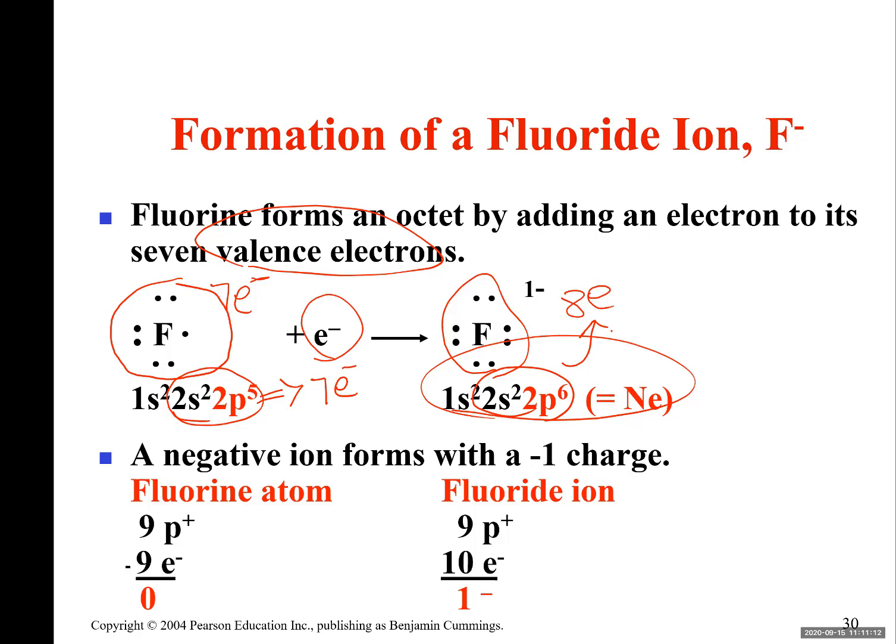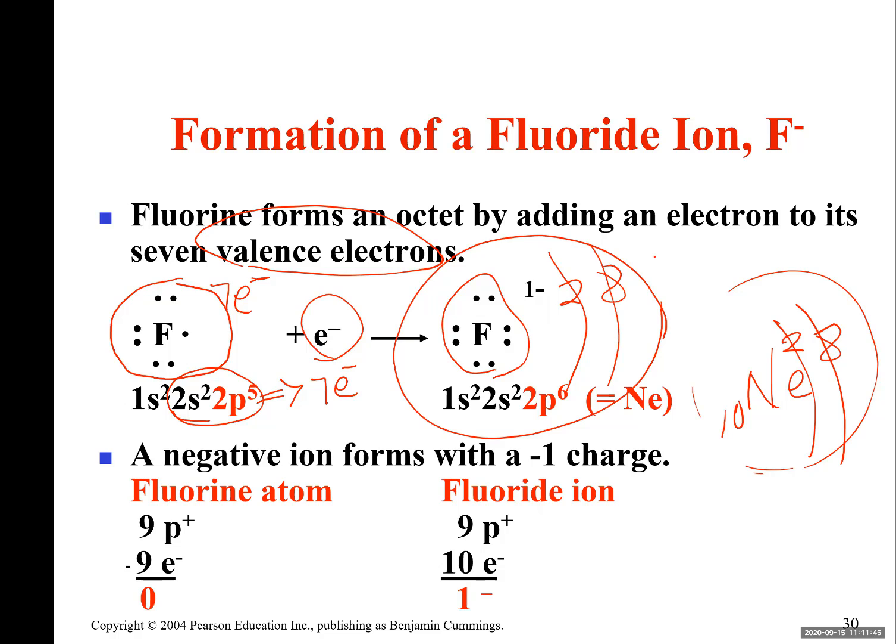If you write the electron configuration of neon, neon has got 10 electrons. Two of these 10 electrons are on the first shell, and eight of these electrons are on the second shell. The same thing for fluorine. Fluorine right now, under this condition, this fluorine has got two electrons on the first shell and eight electrons on the second shell.